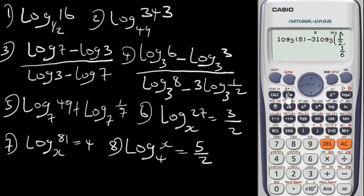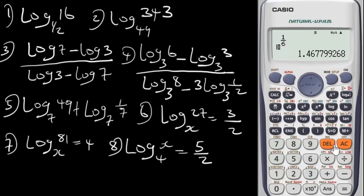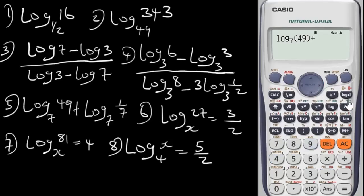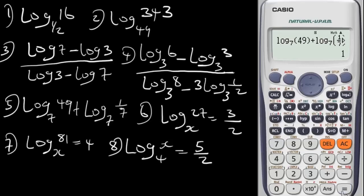Press equals and get the result: 1 over 6. To get the anti-log, press Shift then this log button, then enter 1/2 using the fraction button — 1 over 2 — and press equals. That is the anti-log. Now for question 5: log base 7 of 49 plus log base 7 of 1/7. Input and press equals to get the answer of 1.